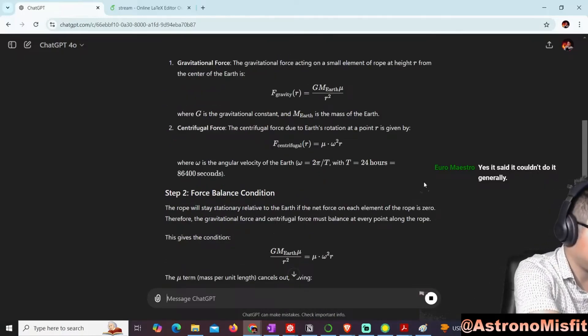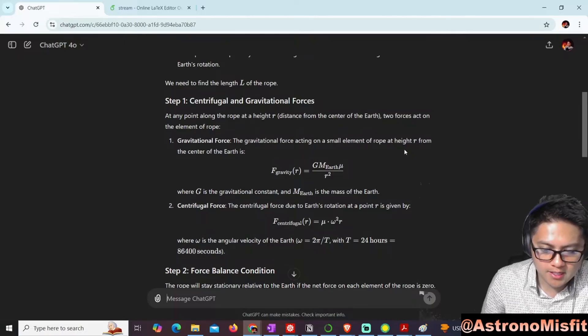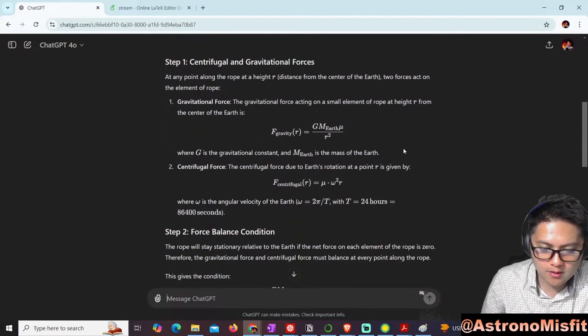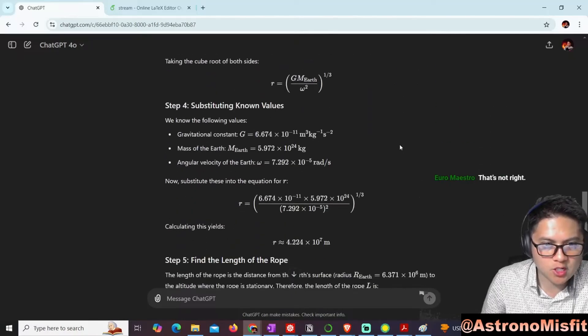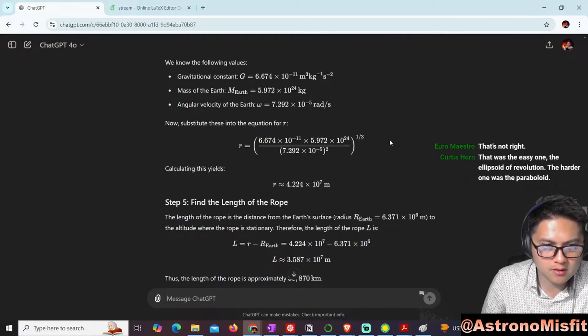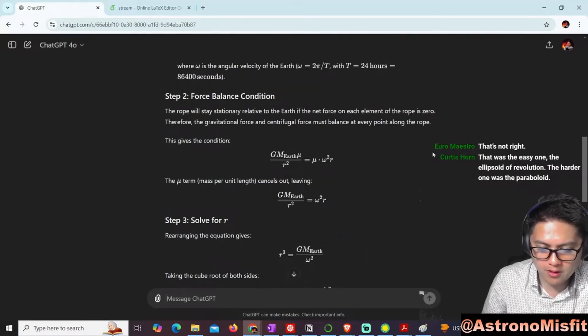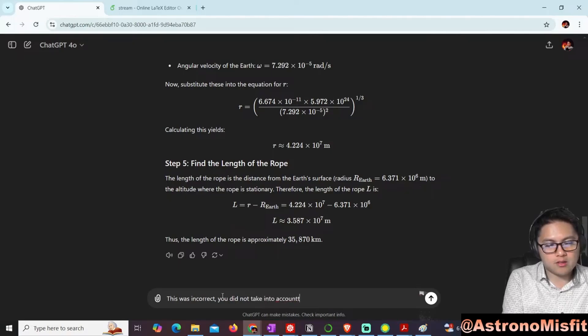Where did it go wrong? Let me see... Yeah, it's not taking into account the extended mass distribution. It's essentially thinking this thing is like a point mass. You need to integrate over the length of the rope. This was incorrect - you did not take into account the extended mass distribution of the rope.